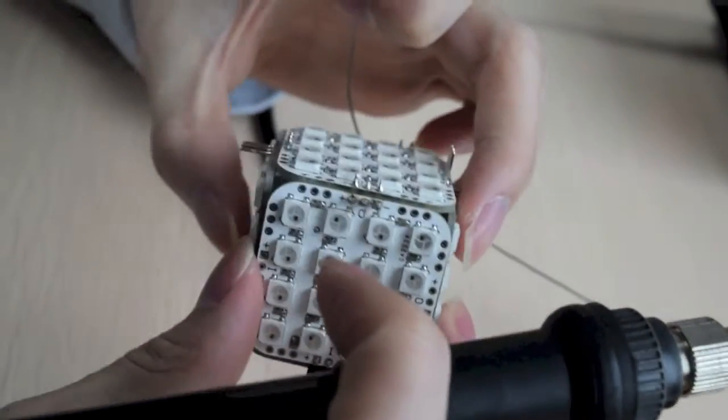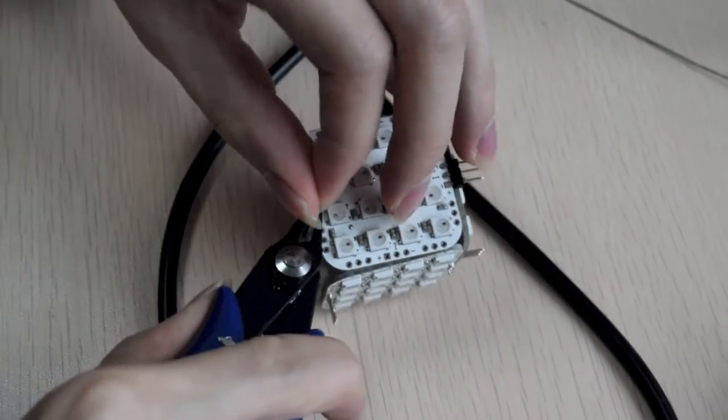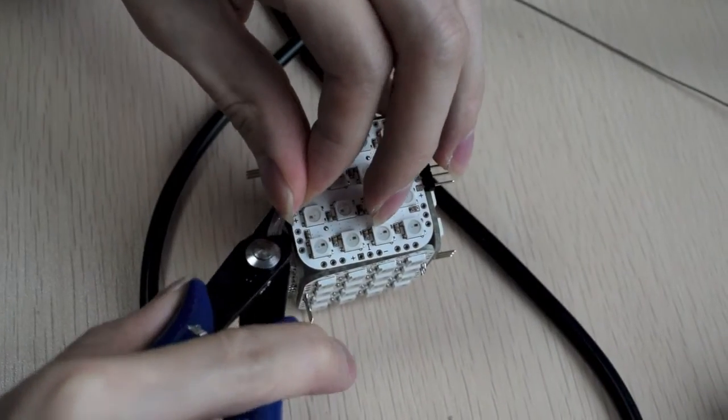Once you have finished soldering, cut away excess header wire from the cube, of course except for the one that will act as the power input header.